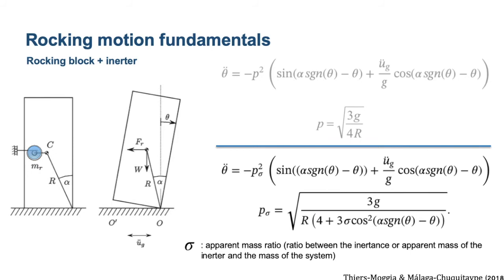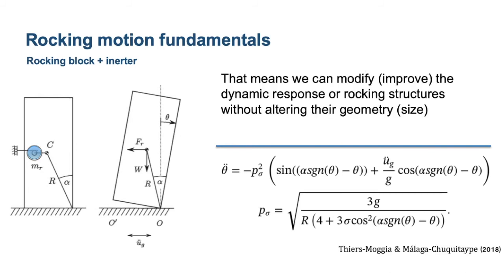You can see that this frequency parameter really governs the motion. And not only that, but it has been observed since the sixties that the larger of two geometrically similar blocks can survive ground motions that will otherwise topple a smaller block. With Rodrigo, when we included the inerter in this fundamental representation of the rocking motion, we came up with a new expression where now this p parameter, the frequency parameter, has this sigma in the denominator that is the apparent mass ratio that is brought about by the inerter. So basically we are reducing the frequency parameter, and therefore our block behaves as if it was of a larger size. We've seen that larger blocks are inherently more stable than smaller blocks. That's good news. That means we can modify the dynamic response of our rocking structures without really changing their geometry.